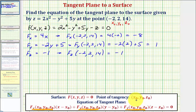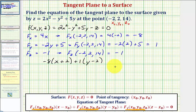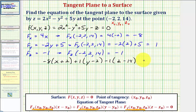Now we can find the equation of our tangent plane. We begin with the partial with respect to x evaluated at the point of tangency, which is negative eight times the quantity x minus x-sub-zero, that's x minus negative two, so x plus two. Plus the partial with respect to y evaluated at the point of tangency, which is positive one times the quantity y minus y-sub-zero, so y minus two. Plus the partial with respect to z, negative one, times the quantity z minus z-sub-zero, so z minus fourteen. This equals zero.